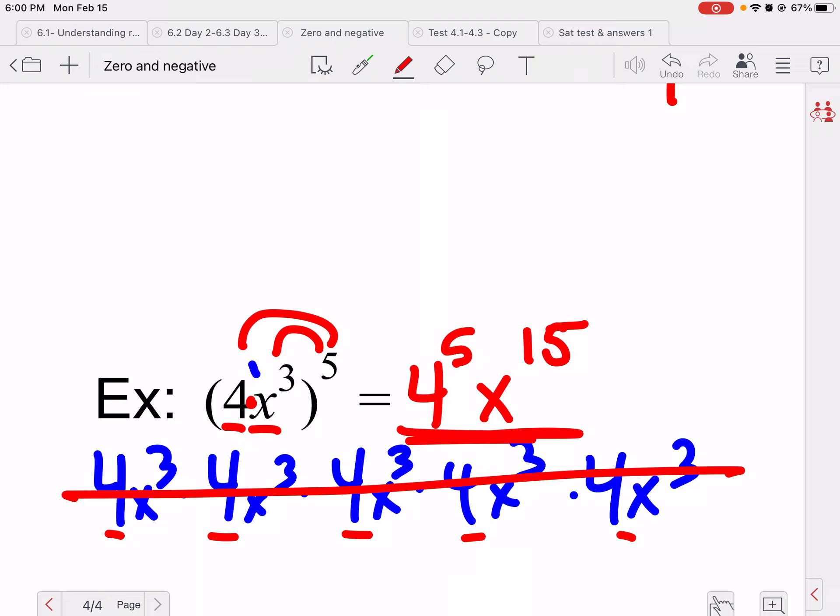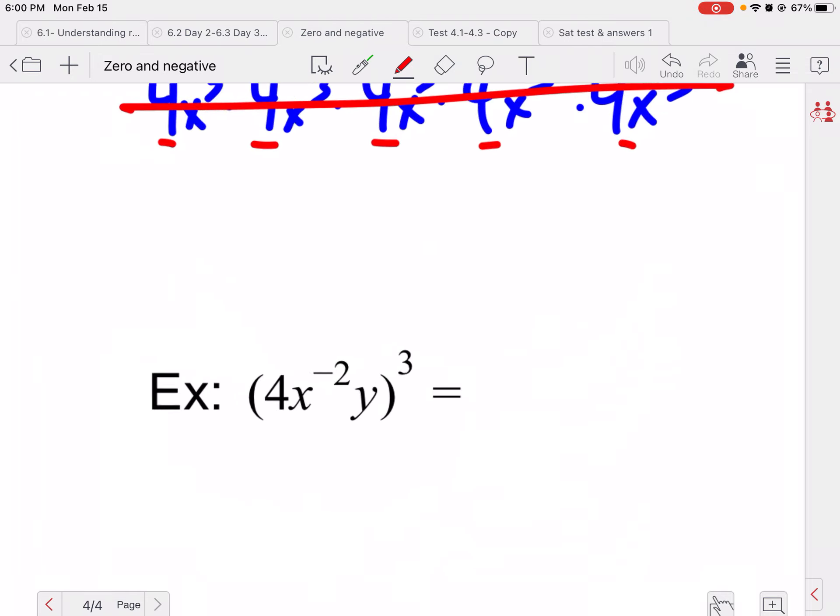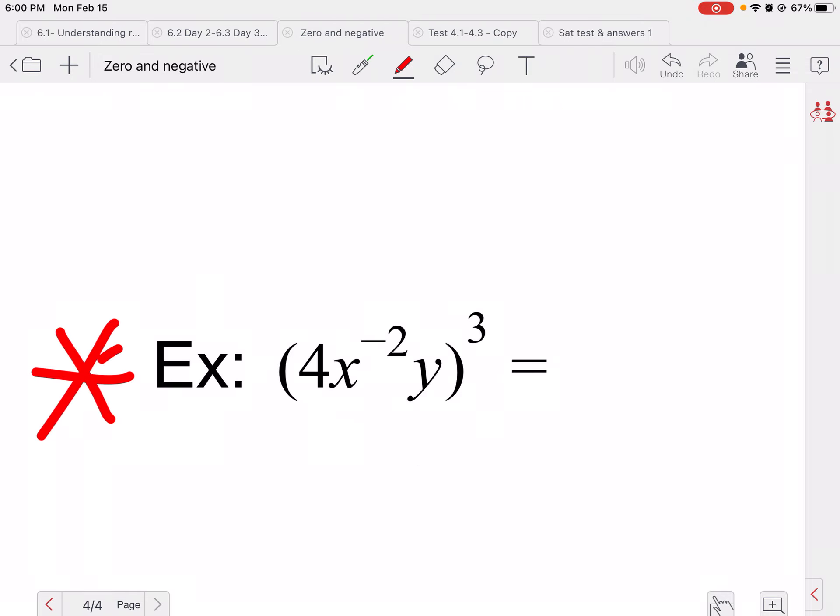So this would be my final answer here. You don't have to write all of these out, I was just trying to explain to you why we have to distribute to the four, not just to the x cubed. If four had been outside the parentheses, don't distribute to it.